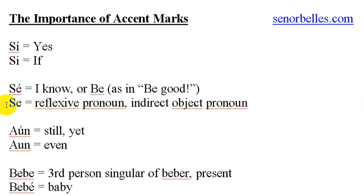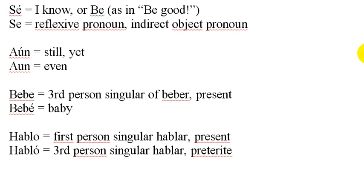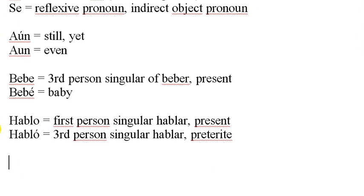The next one: 'aún' and 'aun' are also pronounced the same with or without the accent mark. With the accent mark it means 'still,' and the one without it means 'even.' So for example, 'he still has five classes,' or 'even tall people can't reach that basketball hoop.' Those are some of the more common definitions, though there are others.